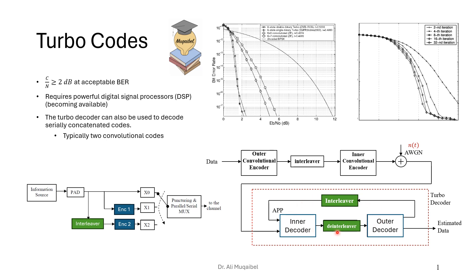This is the turbo principle. In a mechanical turbo engine, you try to take the heat and convert back the lost power and use it again — that's the turbo principle, and hence the name 'turbo decoder' or 'turbo codes.' The name comes from the decoder rather than the encoder.